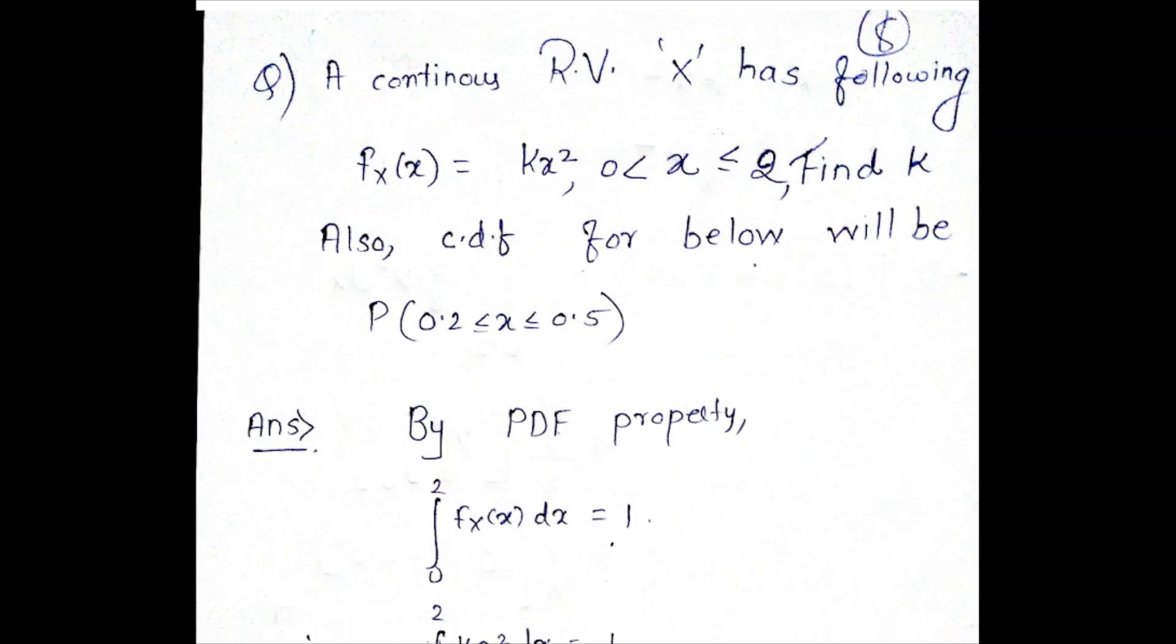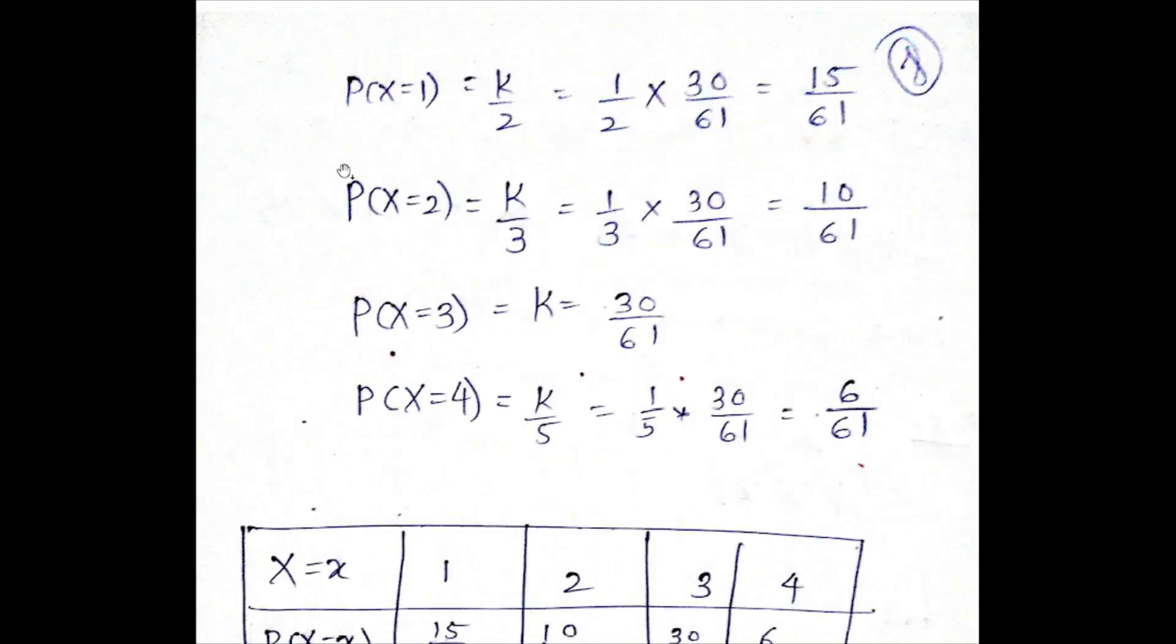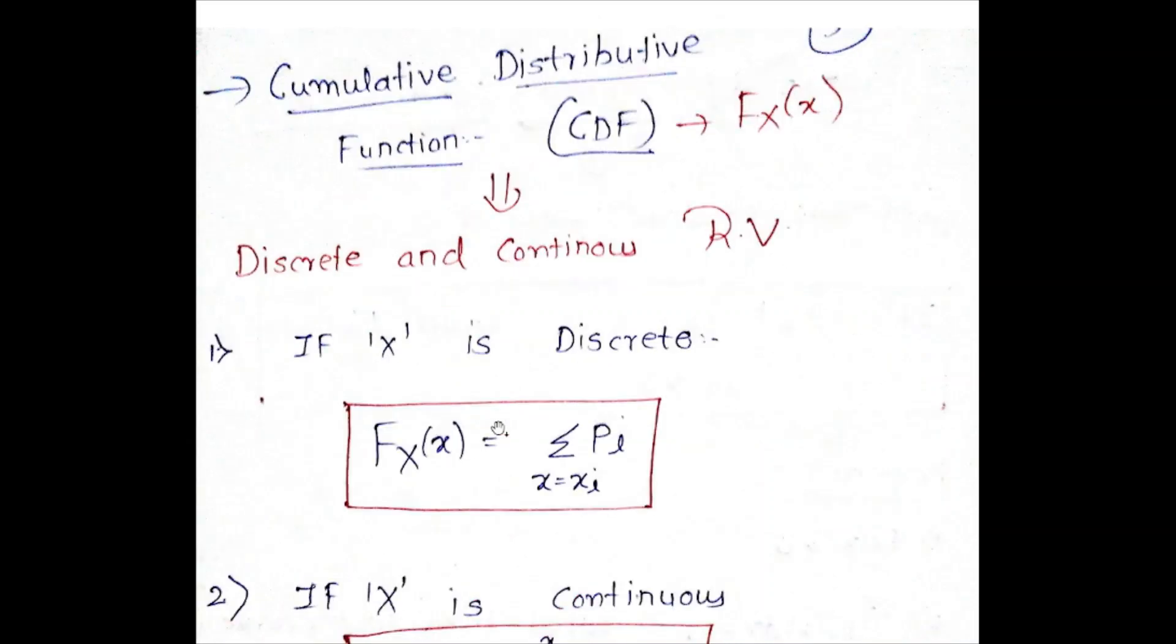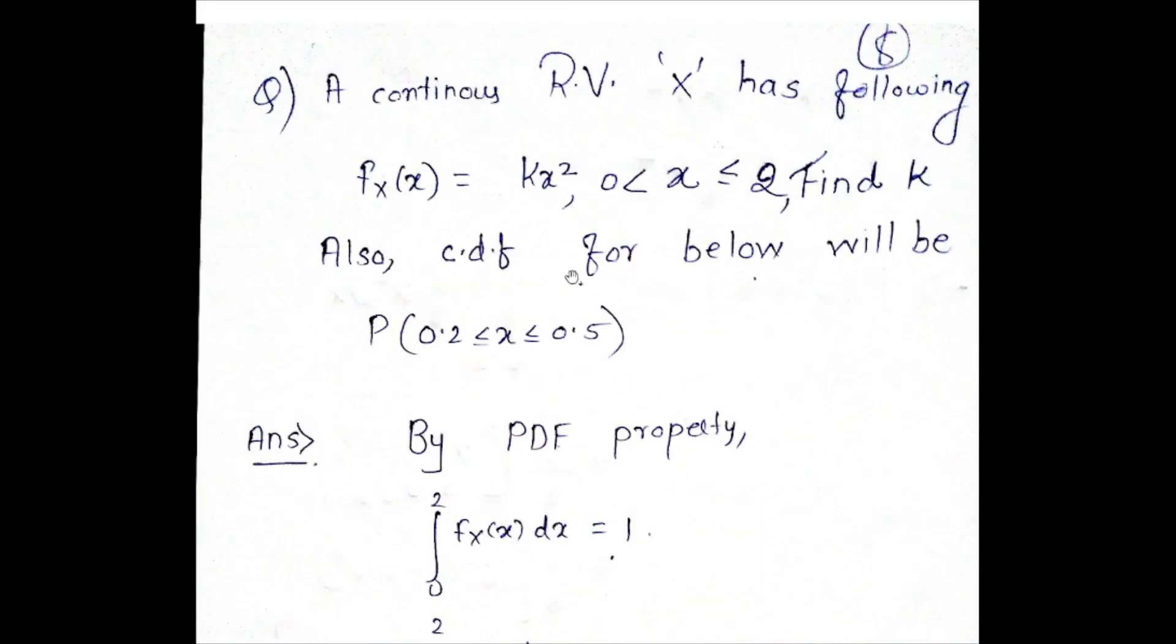The next point is going to be of continuous random variable. Continuous random variable X has the following pdf. f_x(x), this small f_x(x) stands for pdf, probability density function. This value is equal to kx² for x between 0 to 2, find the value of k.